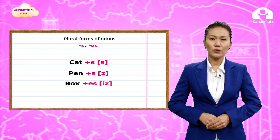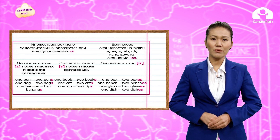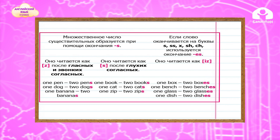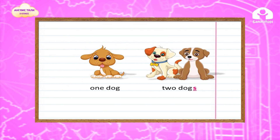Let's move to the main part of our lesson, which is dedicated to plural forms of nouns. We will make up plural forms of nouns by adding S, E, S. We read it as 'S' after voiceless consonants, 'Z' after voiced vowels. Look at the chart of the plural form of nouns and read with me. After voiced consonants and vowels, the sound is Z — for example: two pens, two dogs, two bananas.